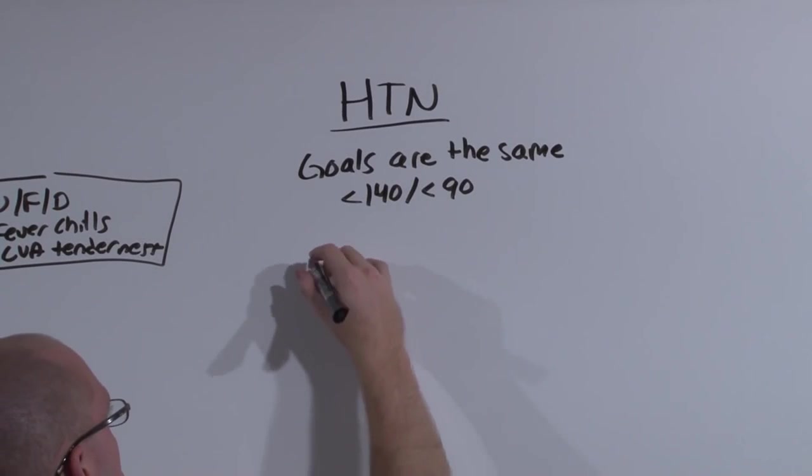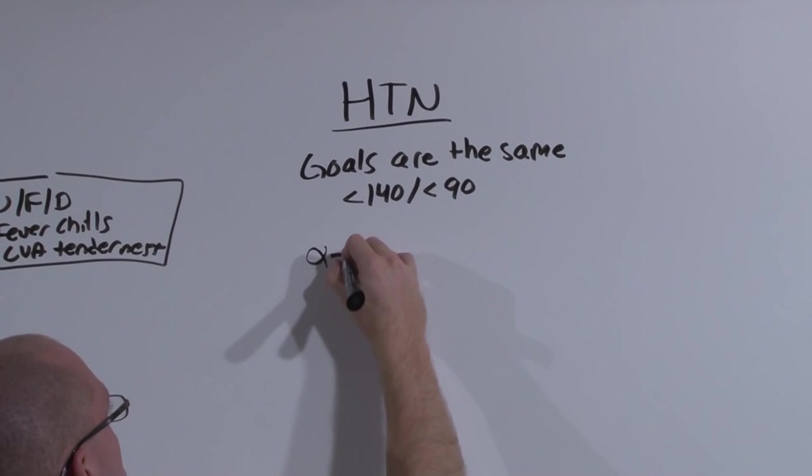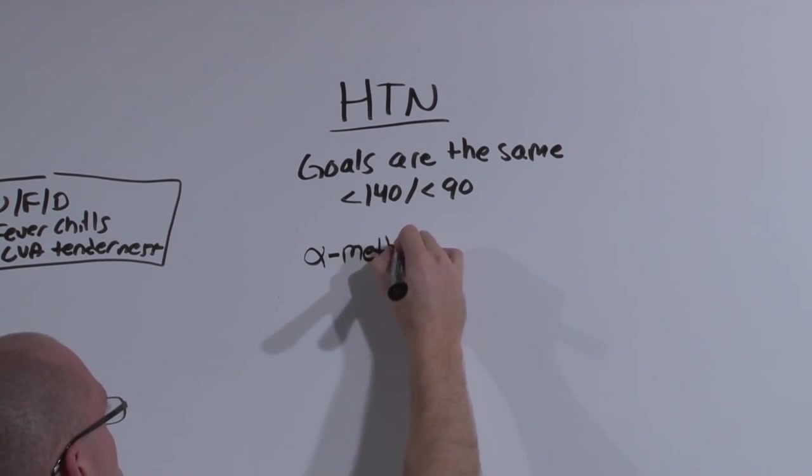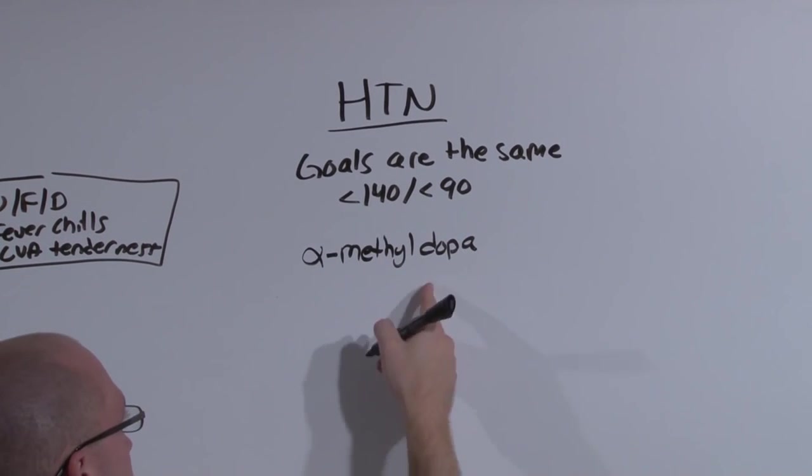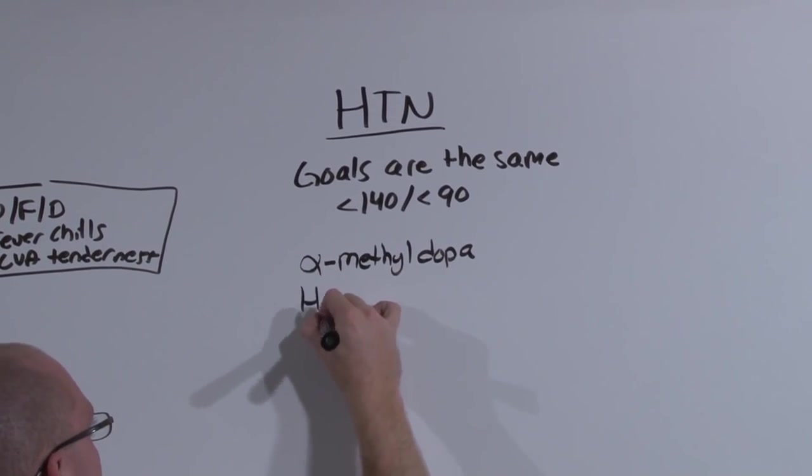The problem is you only have very few medications to use. Alpha-methyldopa is sort of the quintessential medication used during pregnancy, but it is in the same class as hydralazine and metoprolol.